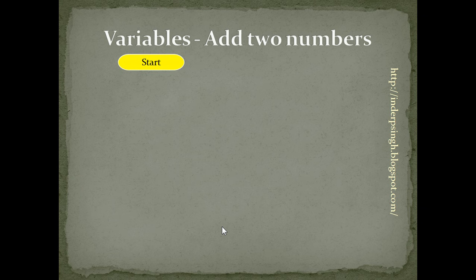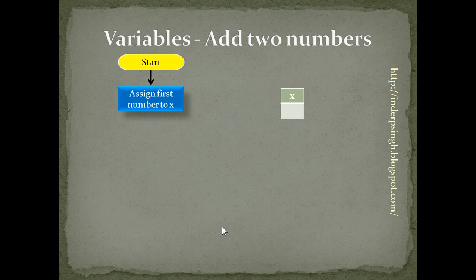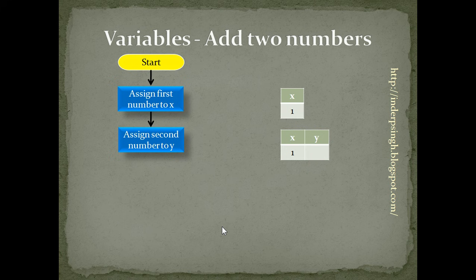Now let us start with a simple script. First, let us see the flowchart of a simple VBScript that adds two numbers. The flowchart starts, then assigns the first number to x. This is a two-step process: first, VBScript reserves a memory location for storing the variable x, and then we actually store the data value in that memory location. Then it assigns the second number to y — again a two-step process. First the memory location for y is reserved, and then the data is stored in that memory location.